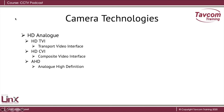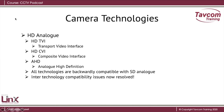Depending on who you buy the equipment from, different manufacturers will use one of those three platforms. All technologies are backwardly compatible with standard definition. Initially, if you bought an HD TVI camera you had to have an HD TVI recorder, and the same applied to CVI and AHD. They now have some kind of agreement in place which allows all technologies to be viewed on all platforms.